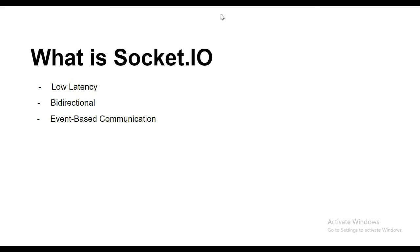The three main advantages of Socket.IO are: low latency, bi-directional, and event-based communication. Low latency means it can handle large amounts of data and transfer it in minimum time. Bi-directional means it can transmit data in both directions. Event-based communication means it triggers an event whenever anything occurs, so it only sends data when an event occurs. Socket.IO uses the WebSocket protocol, which allows it to create real-time and cross-platform applications.